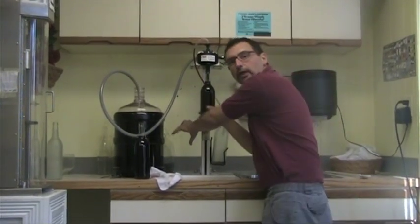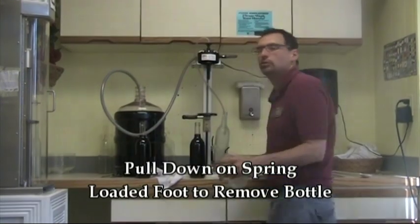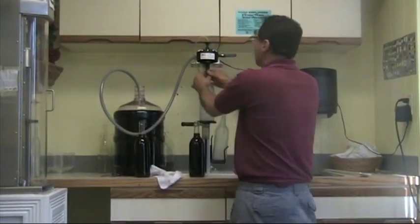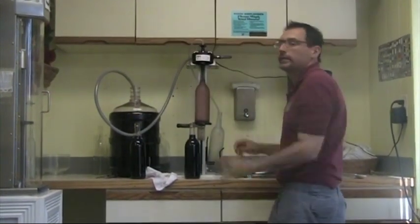So what we'll do now, we'll pull down on the foot, remove the bottle, and we're ready to put our next bottle in place. So push the foot down, lift up, make sure we're secure here, and we'll squeeze the trigger again, and begin filling the next bottle.